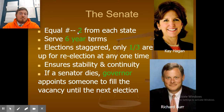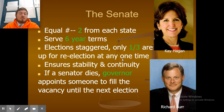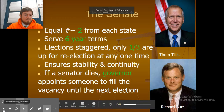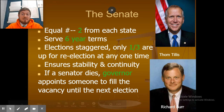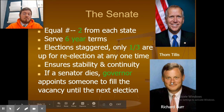The Senate has an equal number of members from each state. Senators serve six-year terms and elections are staggered — only a third are up for re-election at any one time, which ensures stability and continuity. If a senator dies, the governor appoints someone to fill the vacancy until the next election. North Carolina's two senators are Richard Burr and Tom Tillis.